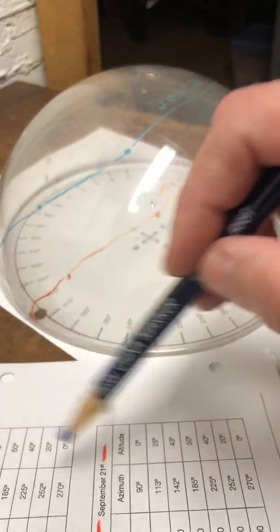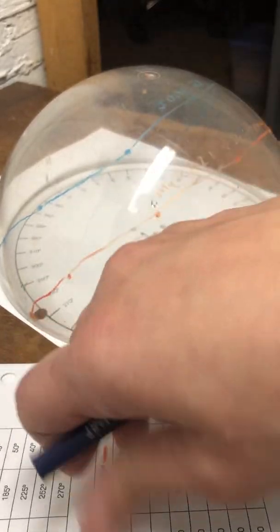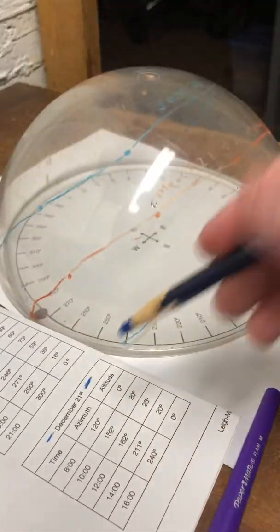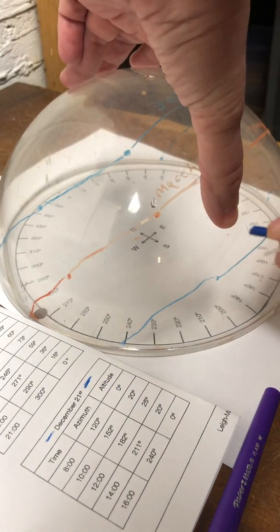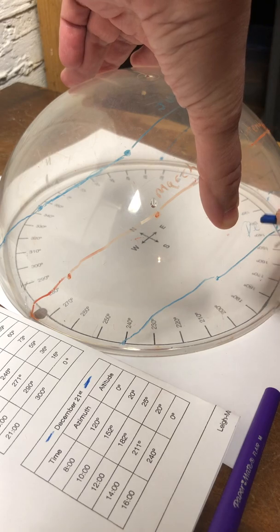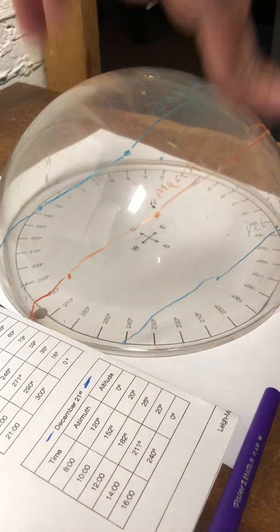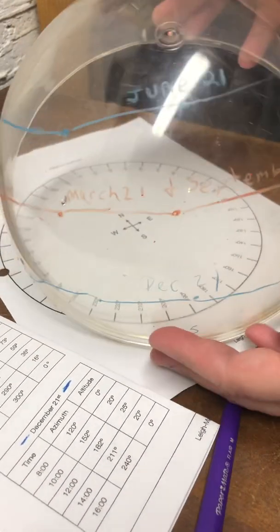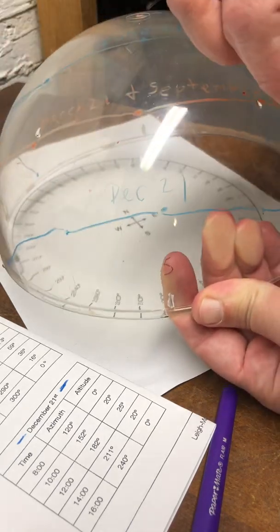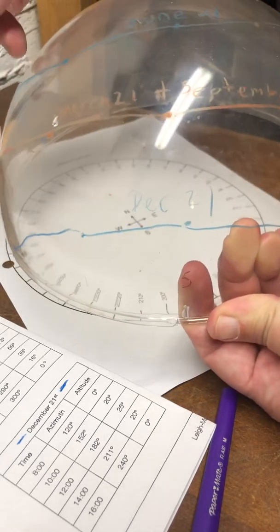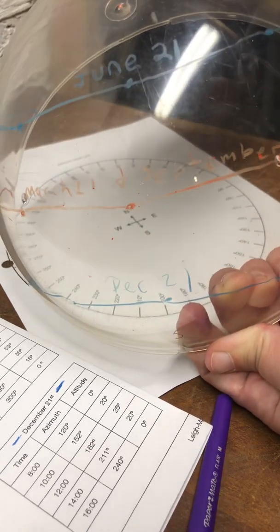And on these equinoxes, everybody gets 12 hours. Now, if we talk about the sun's path, I'm going to also write down that this is December 21. So we really get a clear picture of those sun's path. And you can see that December is very low in the sky, March and September are middle, and the highest point in the sky is June.